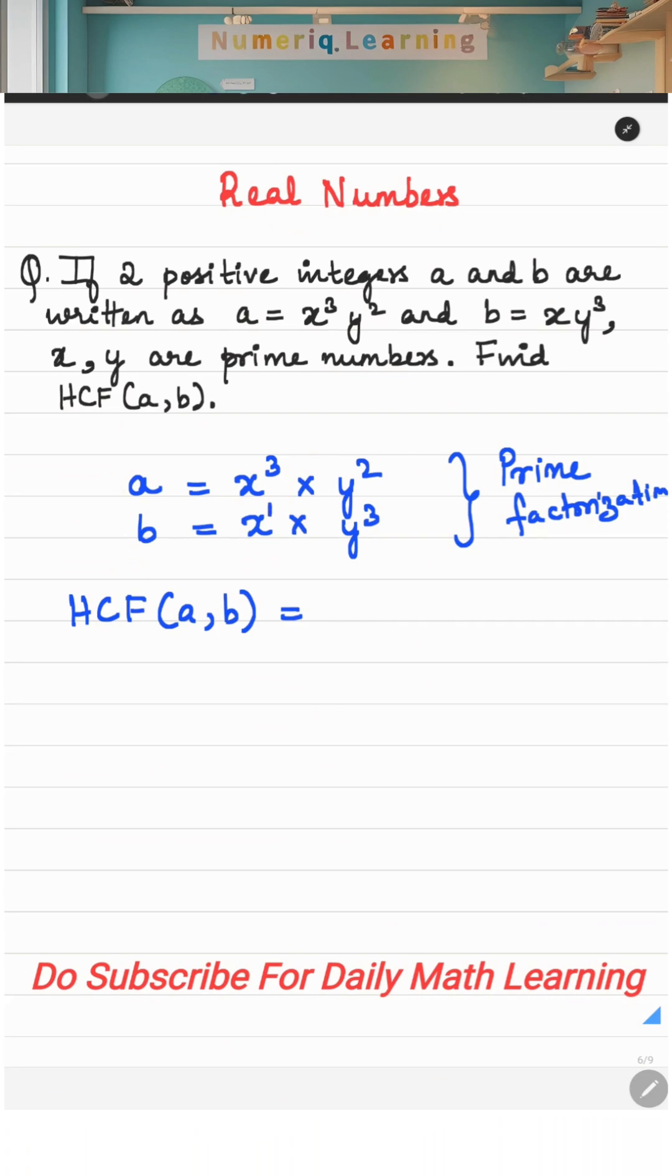So here it is x to the power 1. So among x to the power 3 and x to the power 1, which is the lowest power? It is x to the power 1. Write it here. For the next common factor, y, take the lowest power of y which is y square.